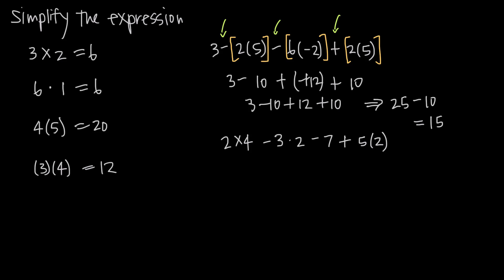Let's look at our second example. We're going to again put brackets around our multiplication. We have 2 times 4 indicated with the good old times sign. Then we have minus, and then 3 times 2 indicated with the dot, minus 7, plus 5 times 2 — again multiplication. Now we've got brackets around our multiplication and every sign in between is just an addition or subtraction sign — subtraction, subtraction, and addition.